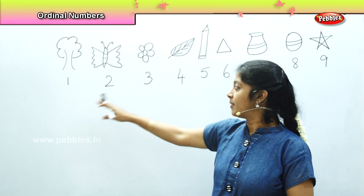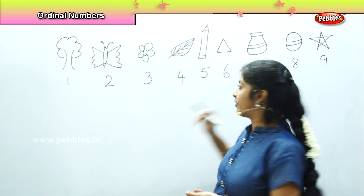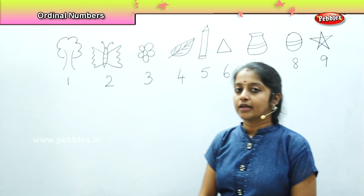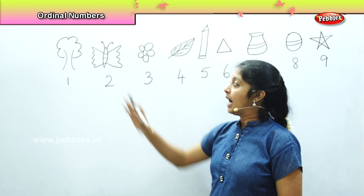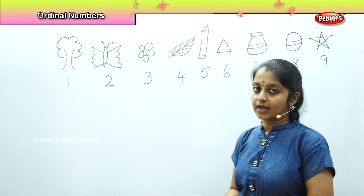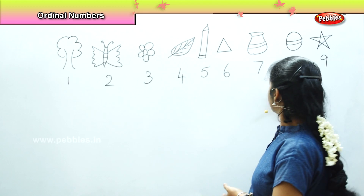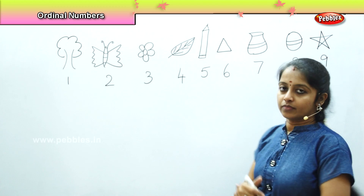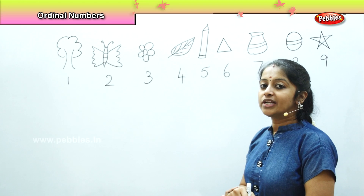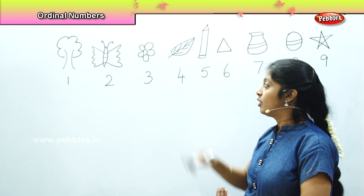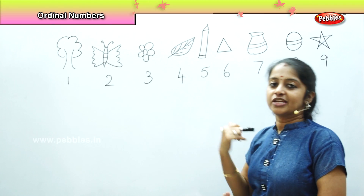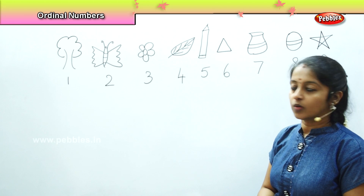We have learned numbers from 1 to 9 and a lot of new things about them. Now I have drawn a few objects on the board and written the numbers below them. I will be asking questions and you need to tell me the position of each object placed on the board.